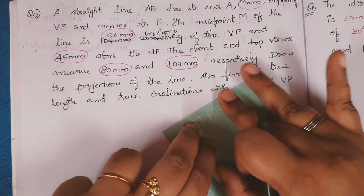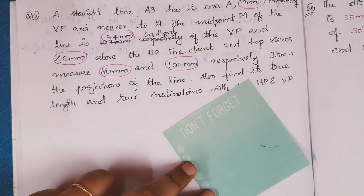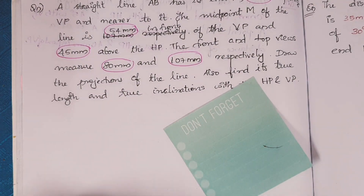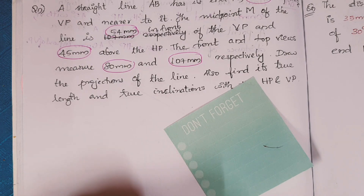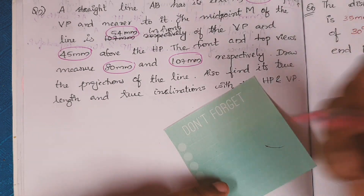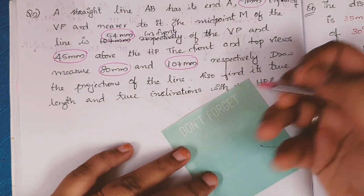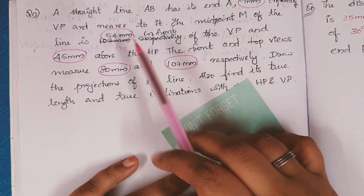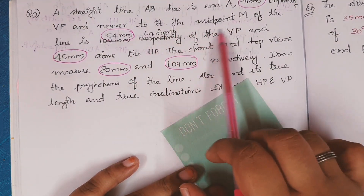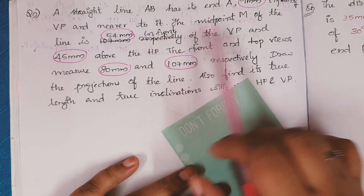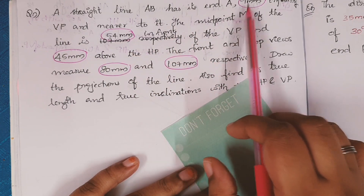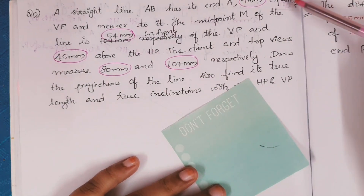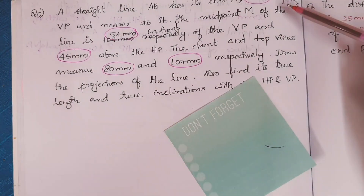So, we need to know what data is available. What data is available for us? We need to know where we have a midpoint in information — there is no full point information. It is halfway. We need to know where we have two sides: in front of VP and HP information.